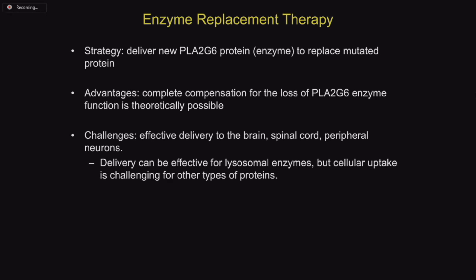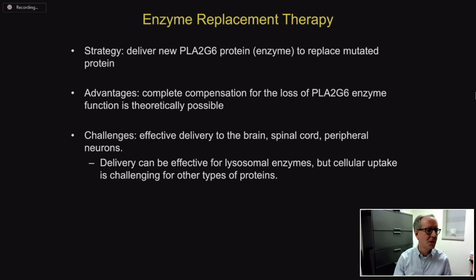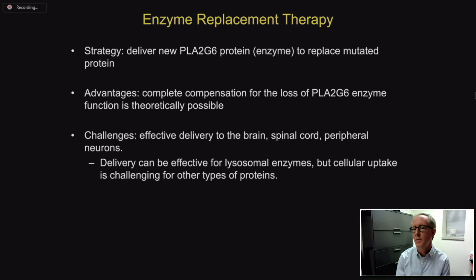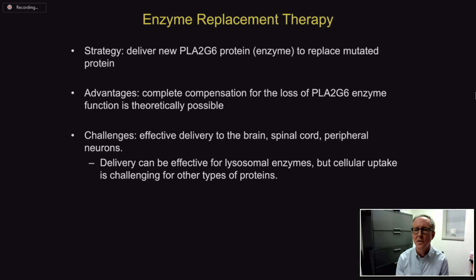I want to briefly touch on a few other strategies we're thinking about. One is an enzyme replacement strategy, in which we want to deliver new PLA2G6 protein — not the gene, but the protein itself — to replace the mutated protein in INAD. This too could completely compensate for the loss of function. At this stage for PLA2G6, it's even more challenging than gene therapy. It could work as a traditional enzyme replacement therapy, which works for some disorders caused by mutations in lysosomal enzymes, but so far not necessarily for disorders like INAD.